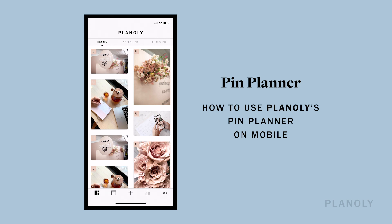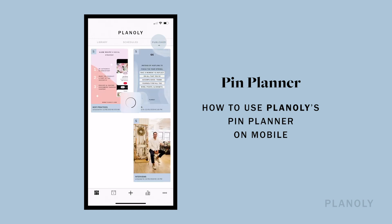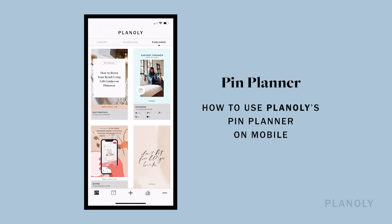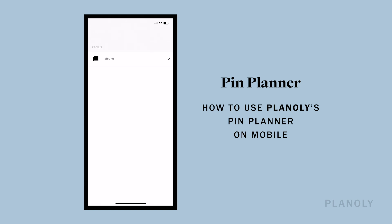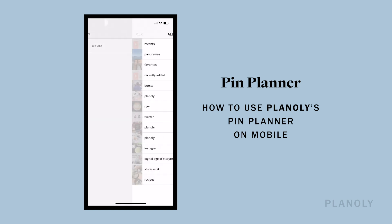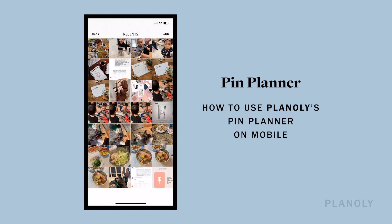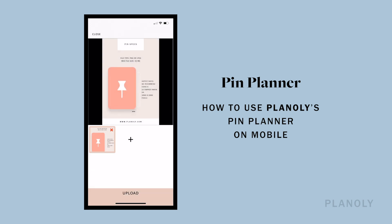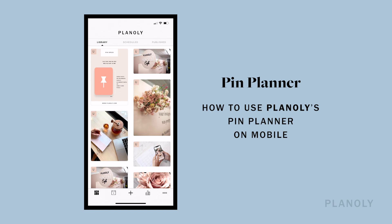Here you can see your library of unscheduled pins, scheduled pins, and published pins. Let's take a look at all three and dive into ways that you can begin uploading and scheduling your pins. To upload content to your library, simply tap on the plus icon in the middle of your screen. Click on Albums and then select a single photo to upload or select multiple photos to bulk upload. Once you've selected content to upload, it's time to start scheduling.